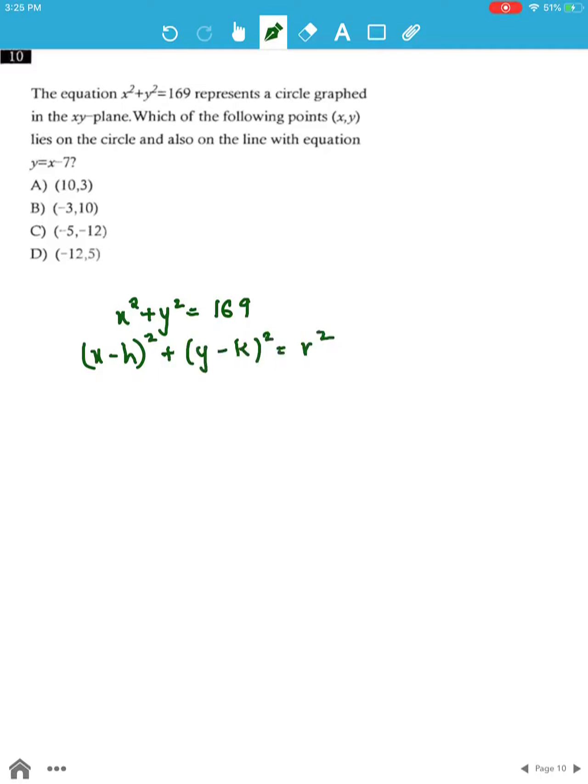The center of the circle (h, k) is (0, 0) and the radius of the circle is 13.